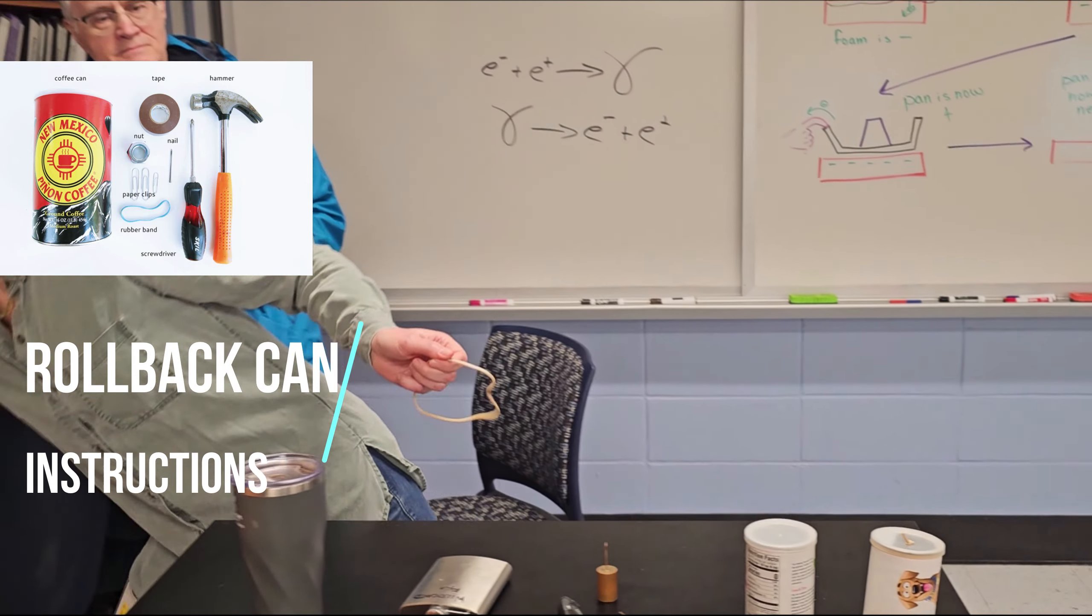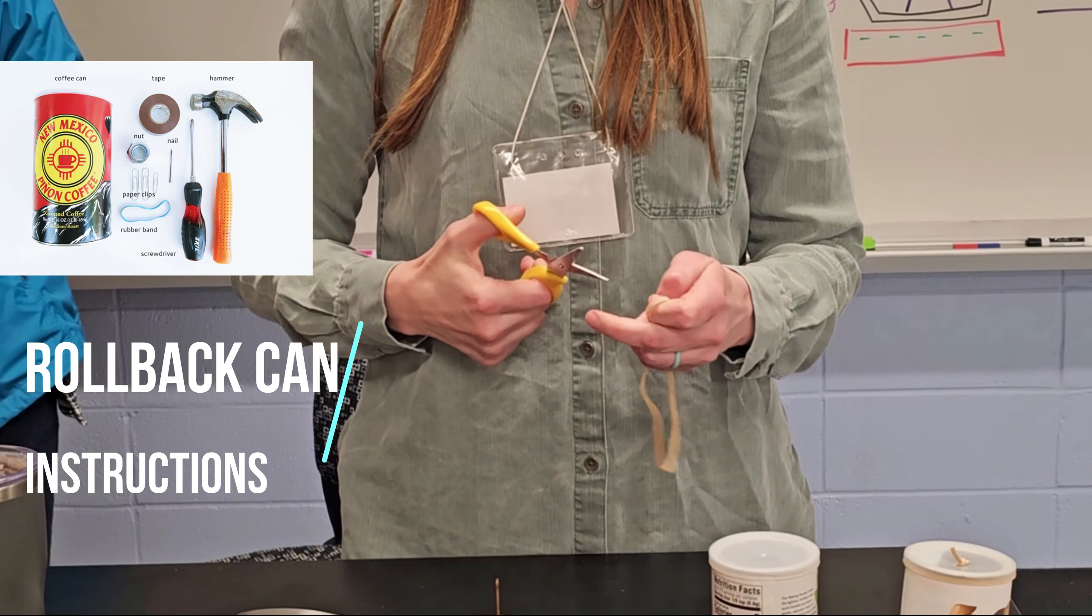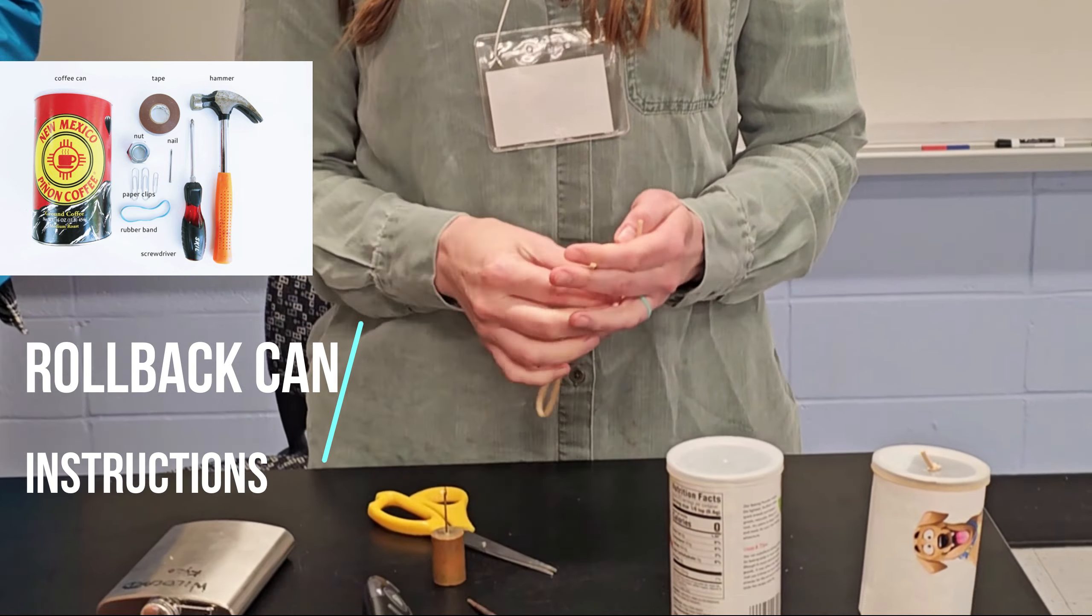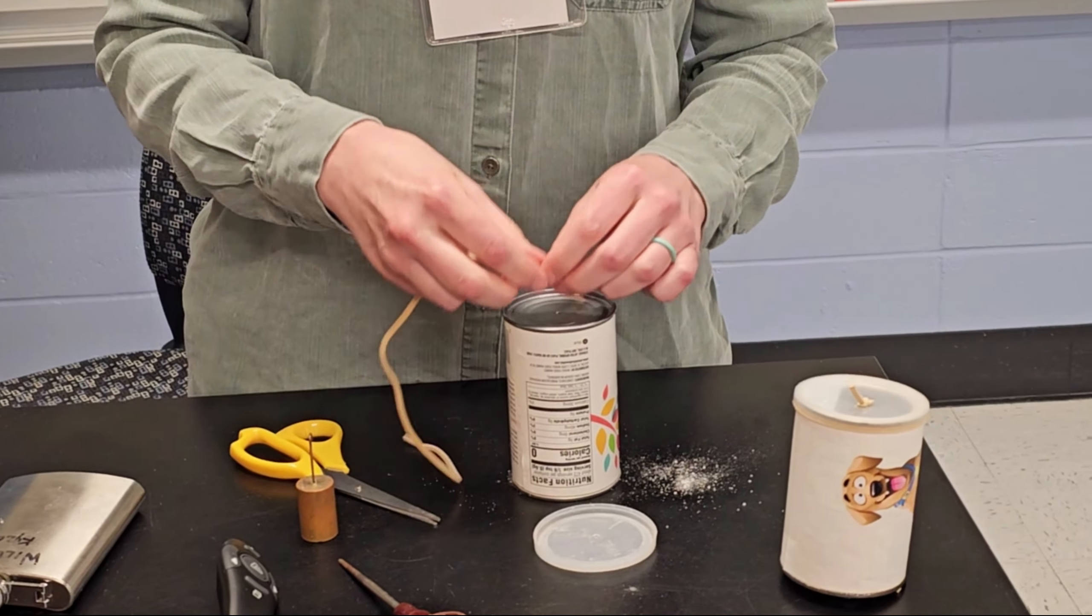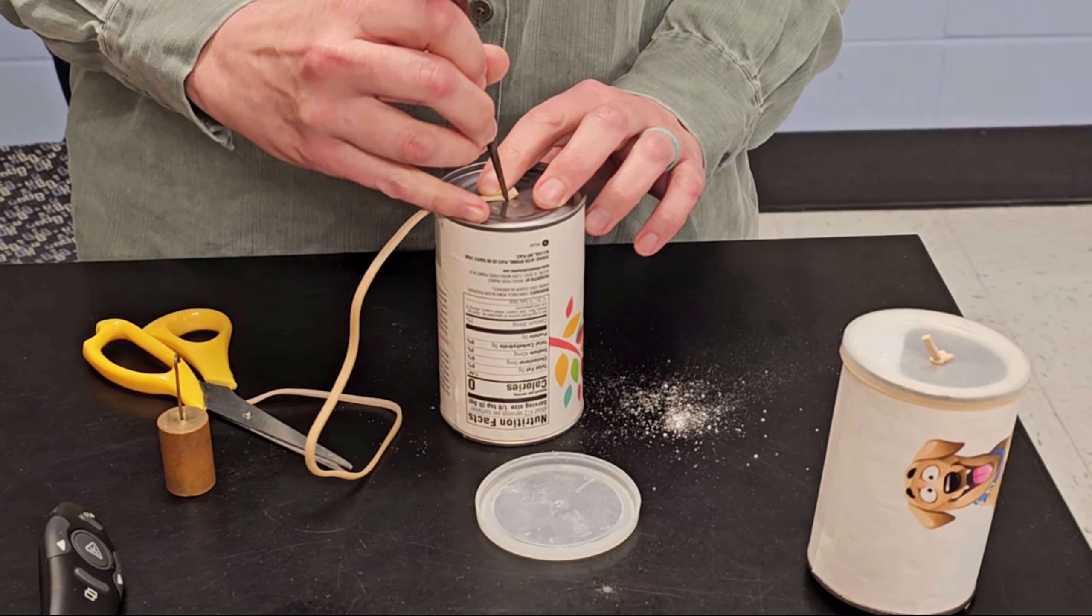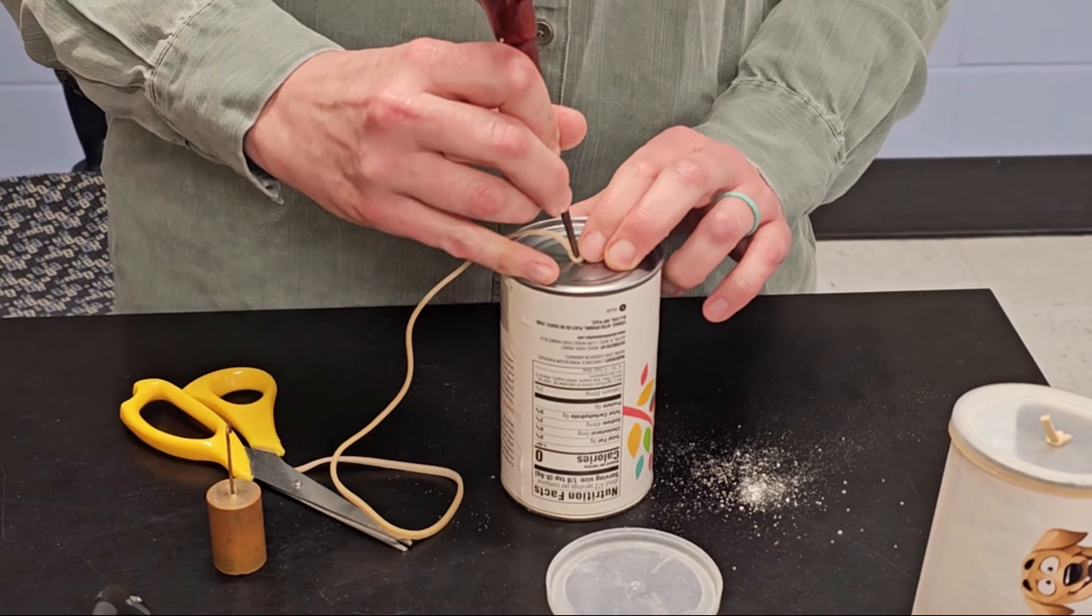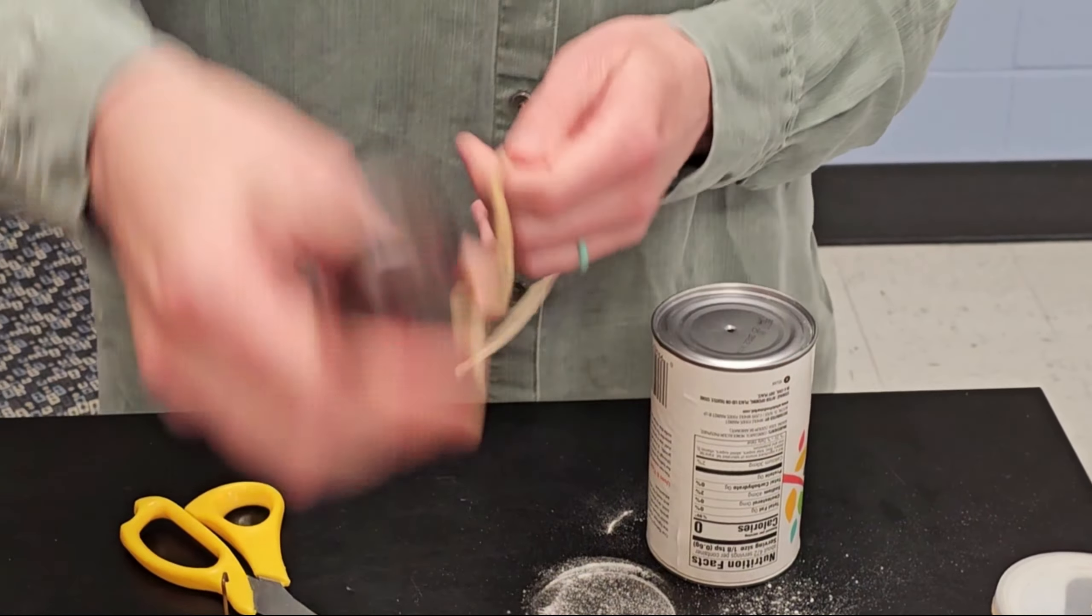You take a rubber band, and this is specifically a long rubber band. I find it best just to poke it through the metal part. You get that all the way through, you get the idea. Once you have that through...